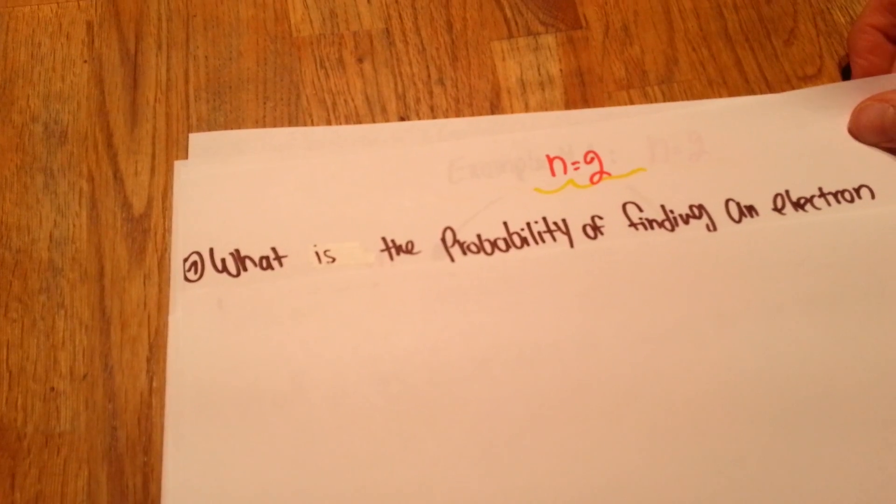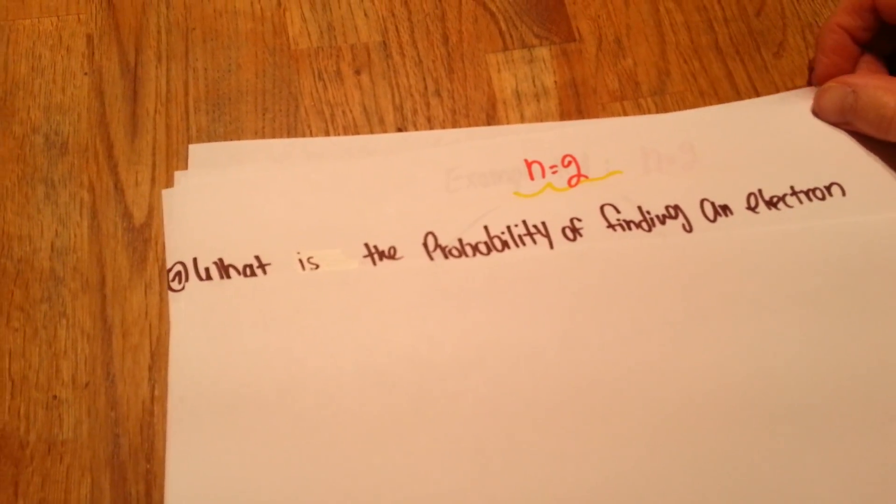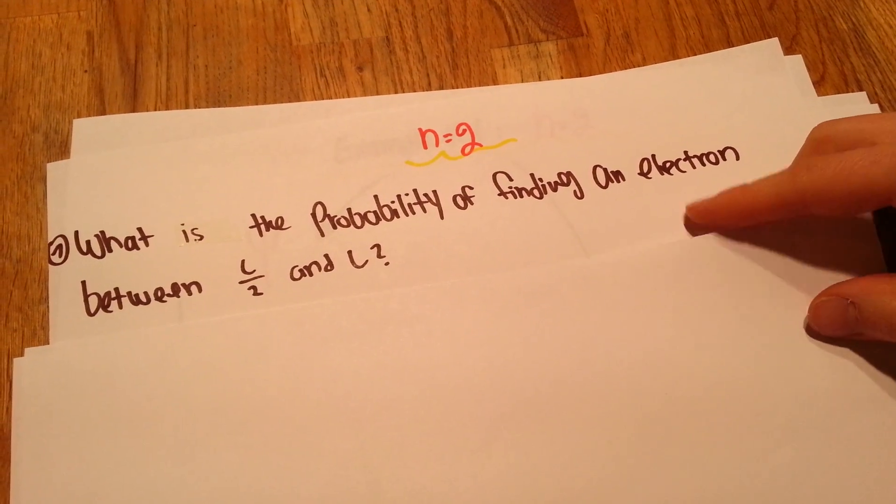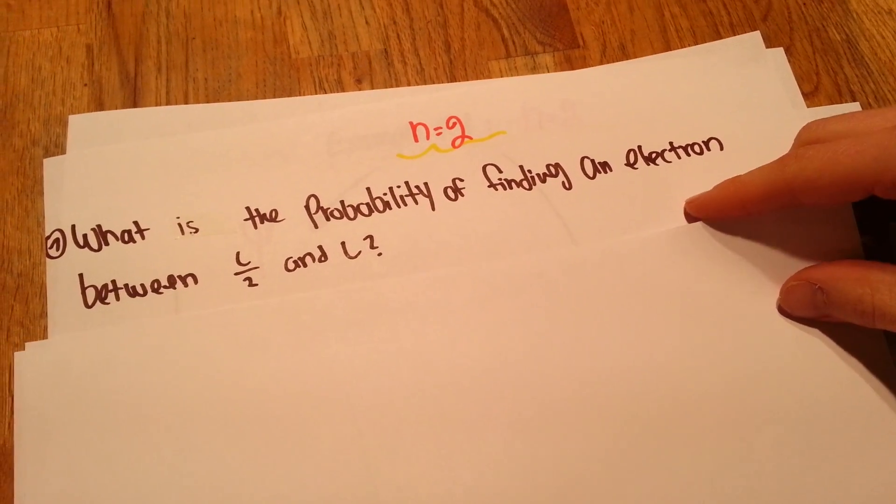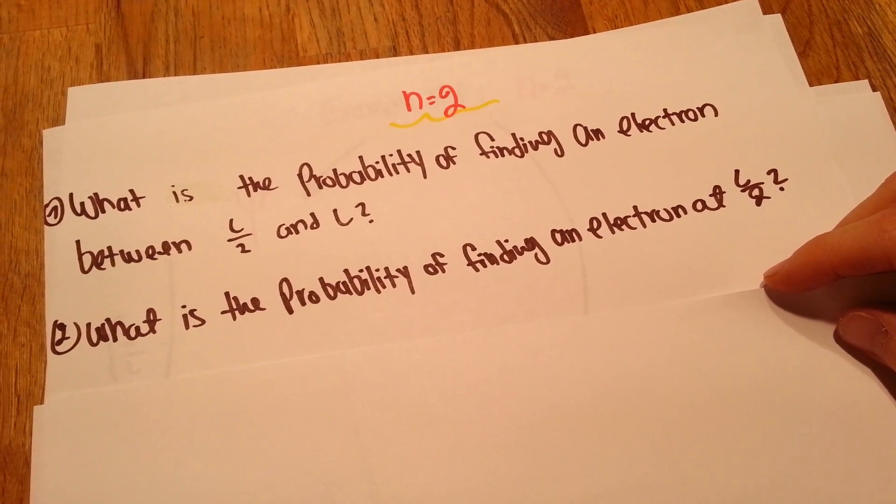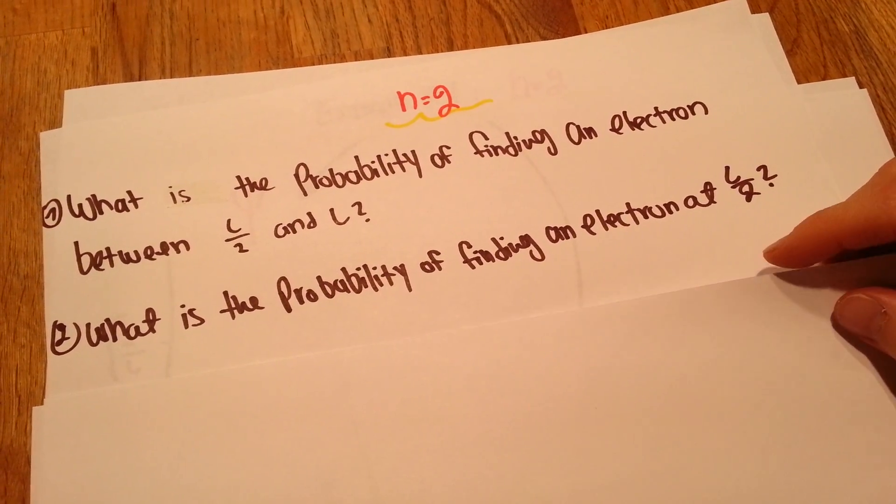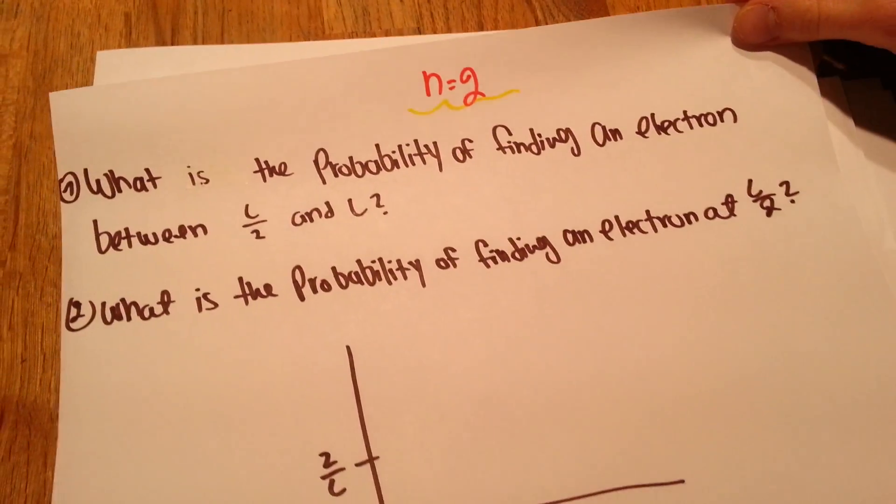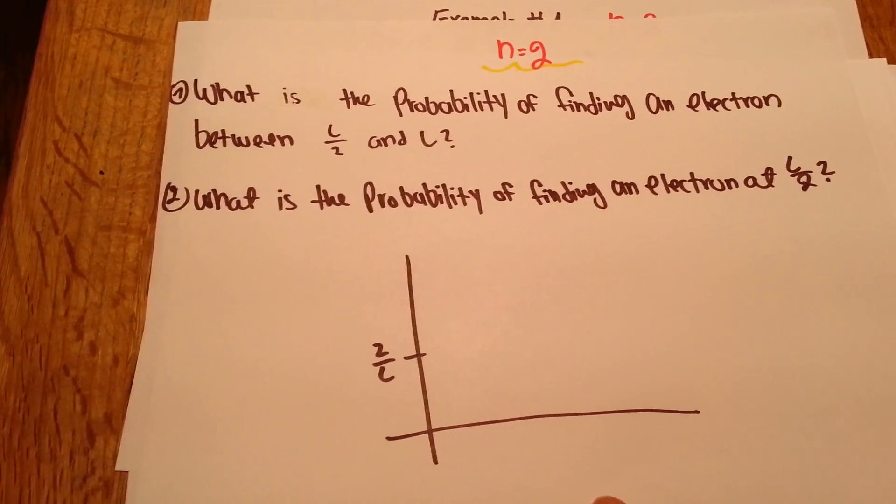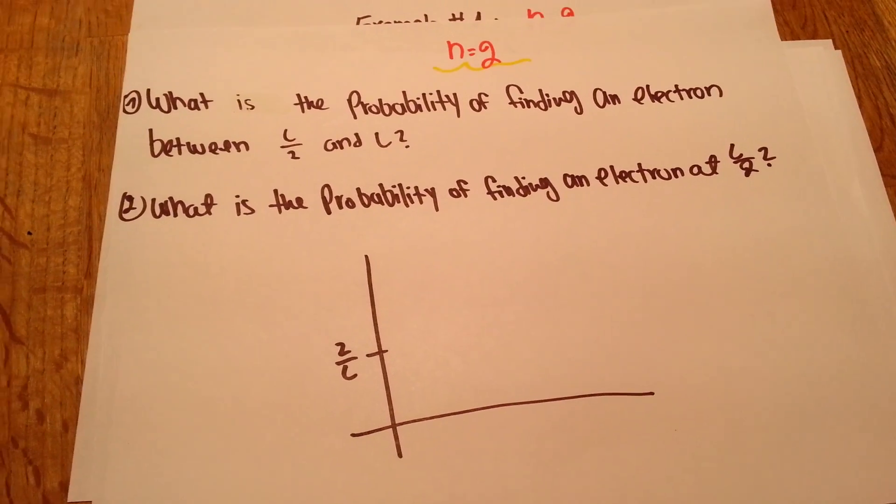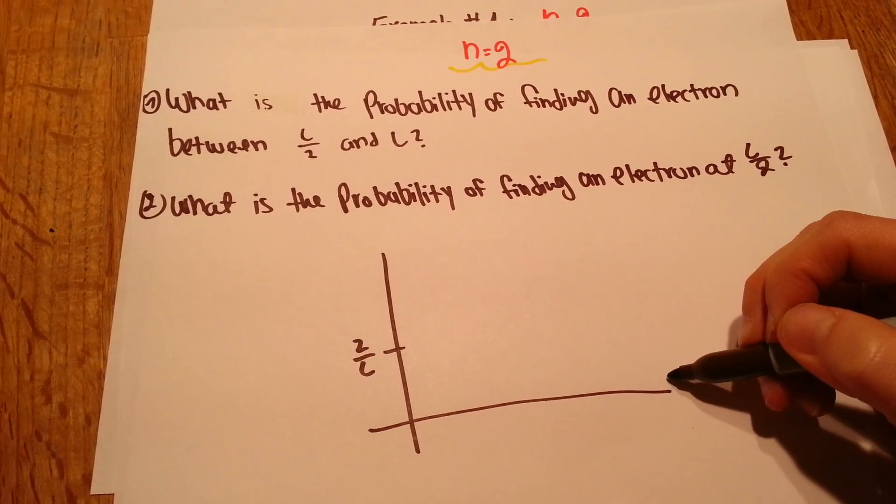What is the probability of finding an electron between L over 2 and L? And the second question we're going to answer is, what is the probability of finding an electron at L divided by 2? If we look at our graph again, first of all we need to label it.